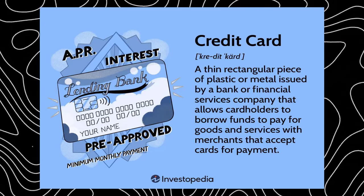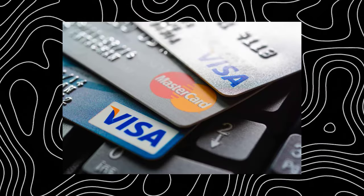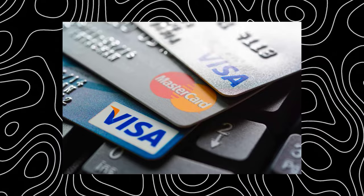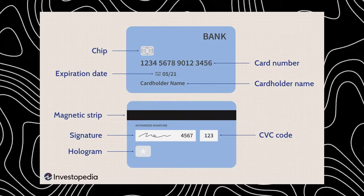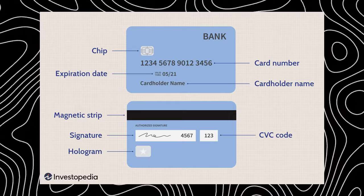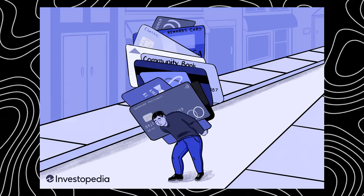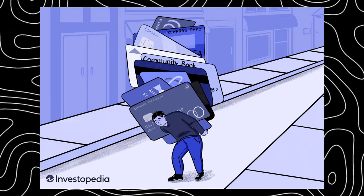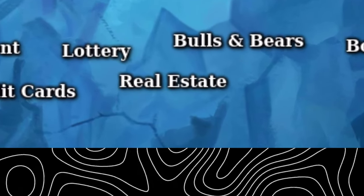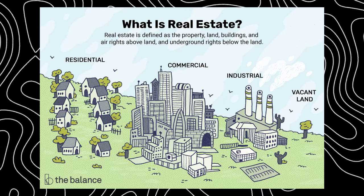Credit cards can be a double-edged sword. They're like getting a loan from the bank every time you use them. A bank issues a credit card based on terms and a set credit amount. However, high interest rates and the temptation to overspend can lead to debt. When used wisely, they can help build your credit score and offer rewards like cash back, travel points, and fraud protection. The key is being responsible — pay off the full balance at the end of each month.